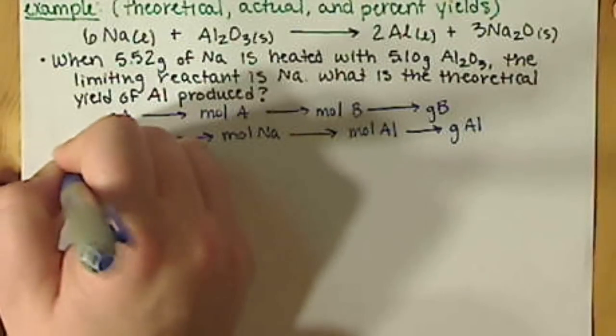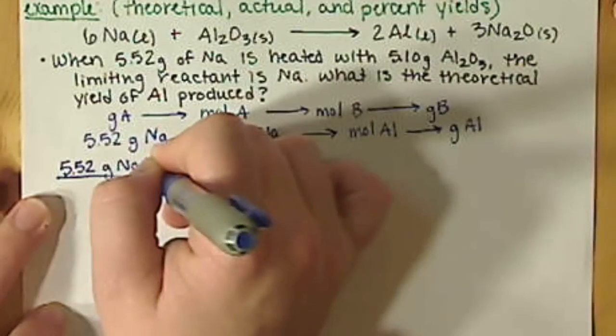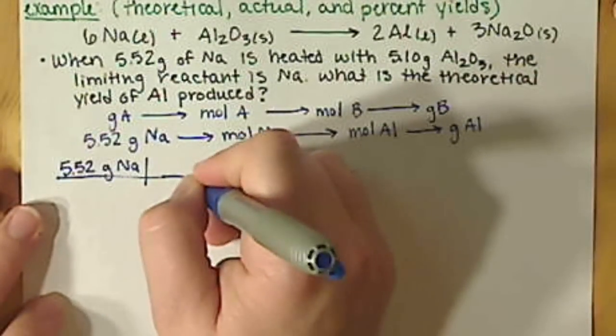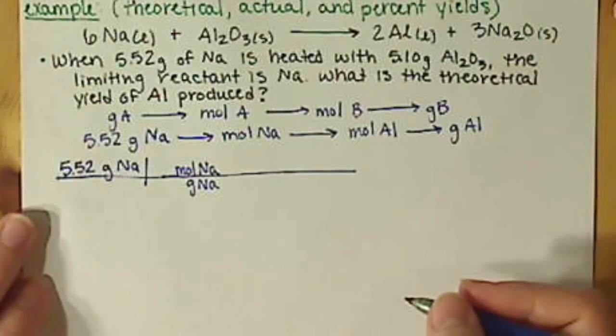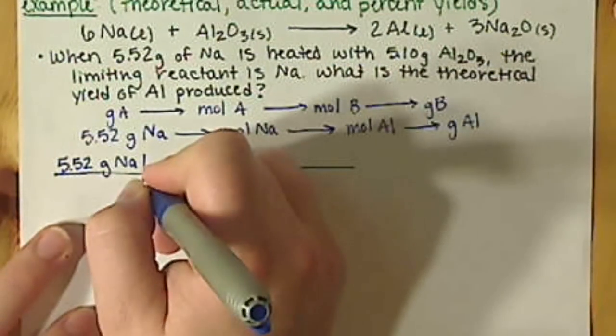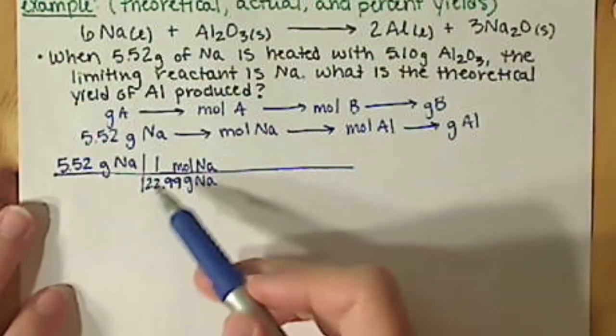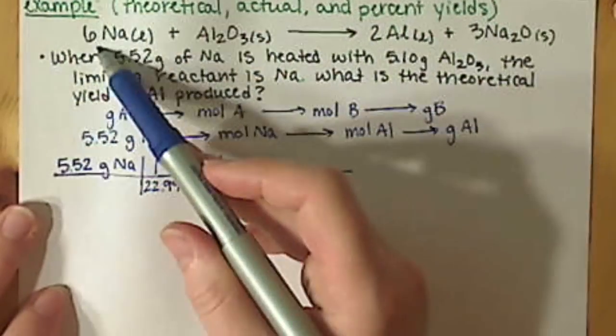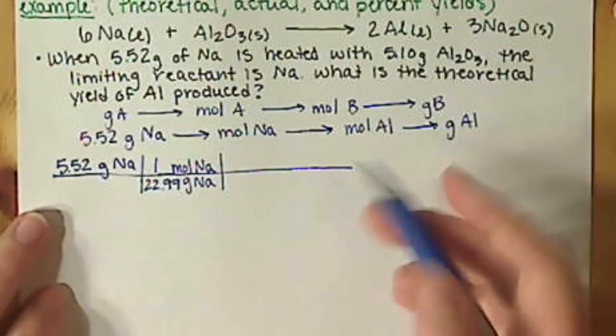So, we start with our 5.52 grams of sodium. We want to go from grams of sodium to moles of sodium. We use our periodic table for that. And sodium has a molar mass of 22.99 grams per one mole. And remember, molar mass is always per one mole. And we take into account our coefficients in our next step. So, when we're going from moles of Na to moles of Al.